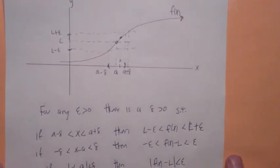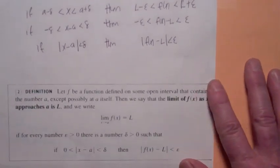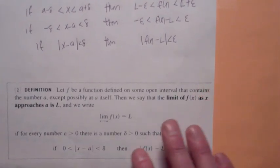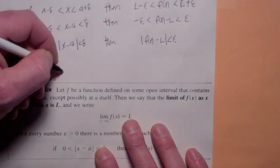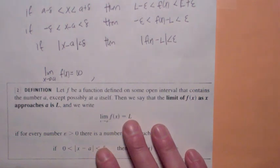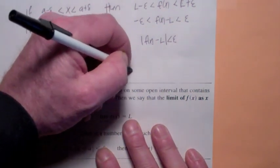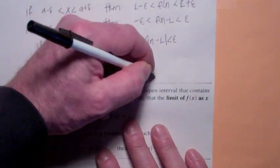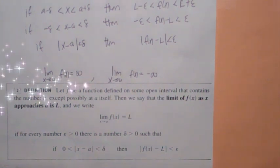And one last thing I want to mention, there's two other definitions that we're going to cover in class in this section. We're going to talk about the formal definition for the limit as x goes to a of f of x equals infinity. I wonder what the picture would look like for that. And also the limit as x goes to a of f of x equals negative infinity. These are also in section 2.4. All right. So on the next one, we're going to look at some examples that demonstrate this formal definition. See you then.